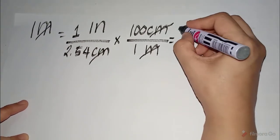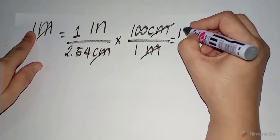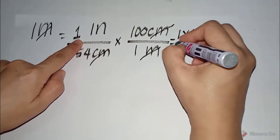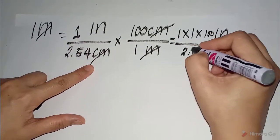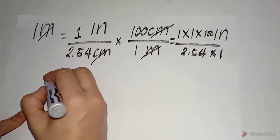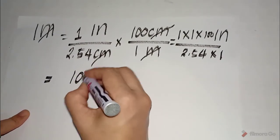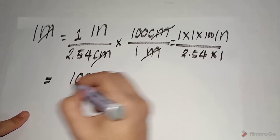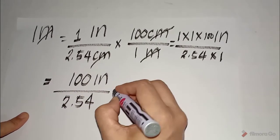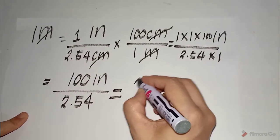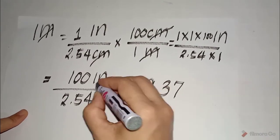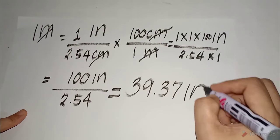So, this is equivalent to 1 times 1 times 100 over 2.54 times 1. Or, if we are going to simplify, this is 100 inches over 2.54, which is equal to 39.37. The unit of measure is inches.